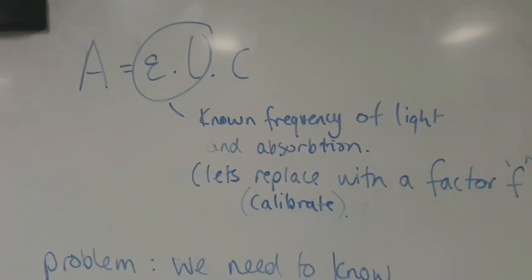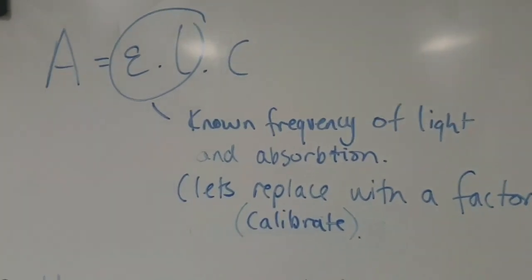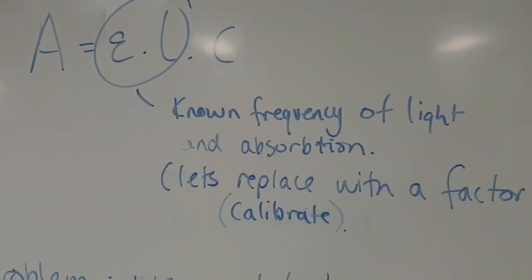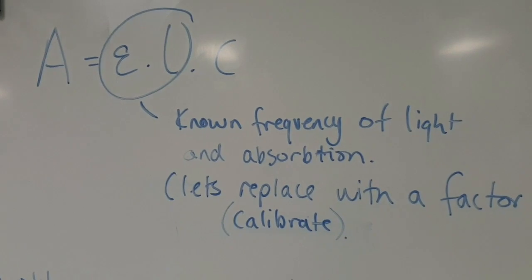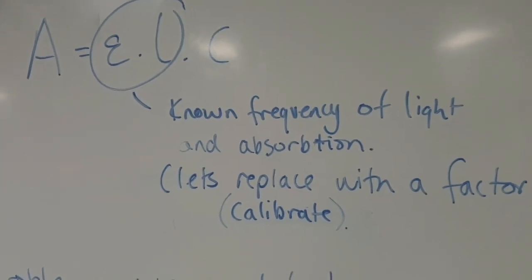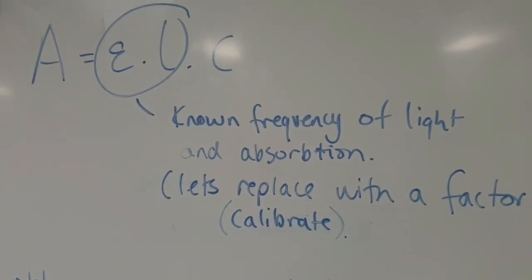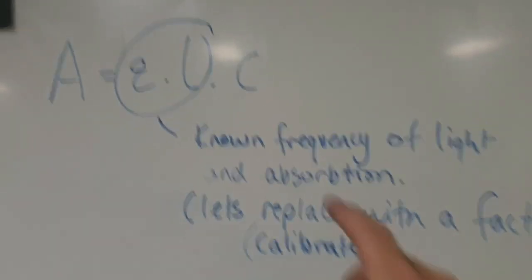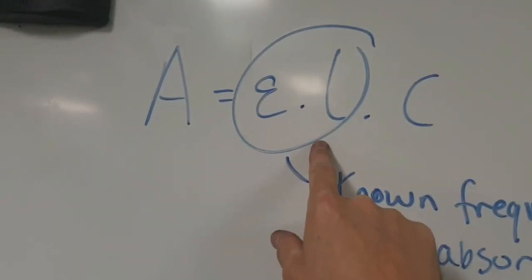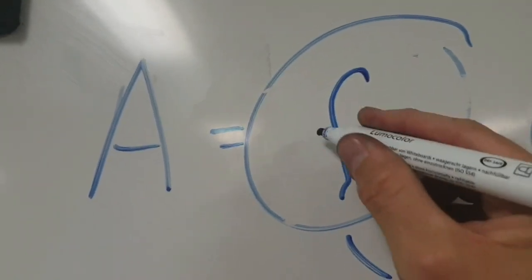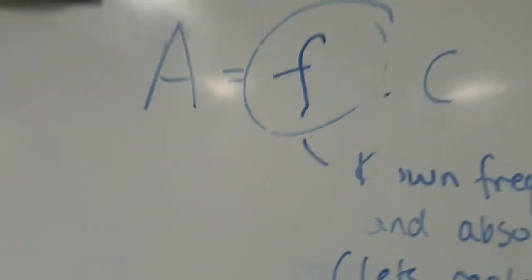So, because we don't have a known frequency, we're going to try to use green light from a green piece of paper, but we're going to have to calibrate it ourselves, and why not just get rid of these two things all together, replace it with an F factor. That's a terrible F.